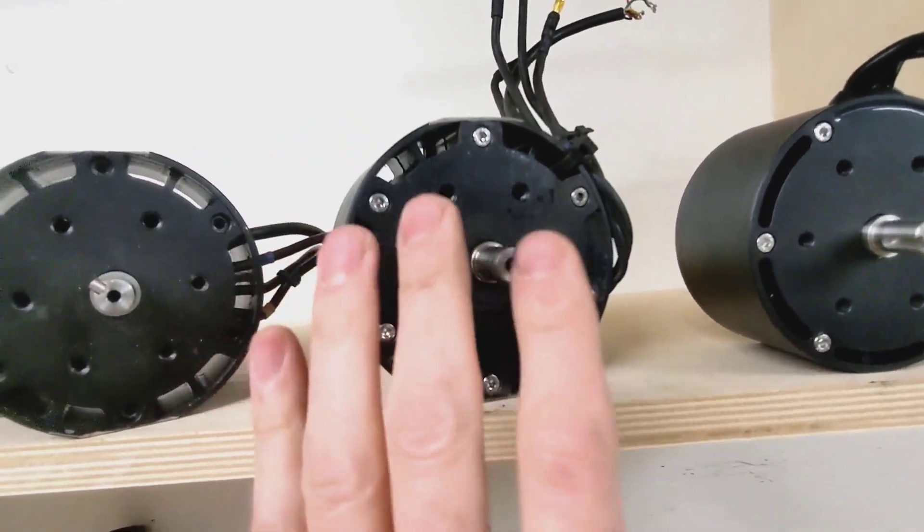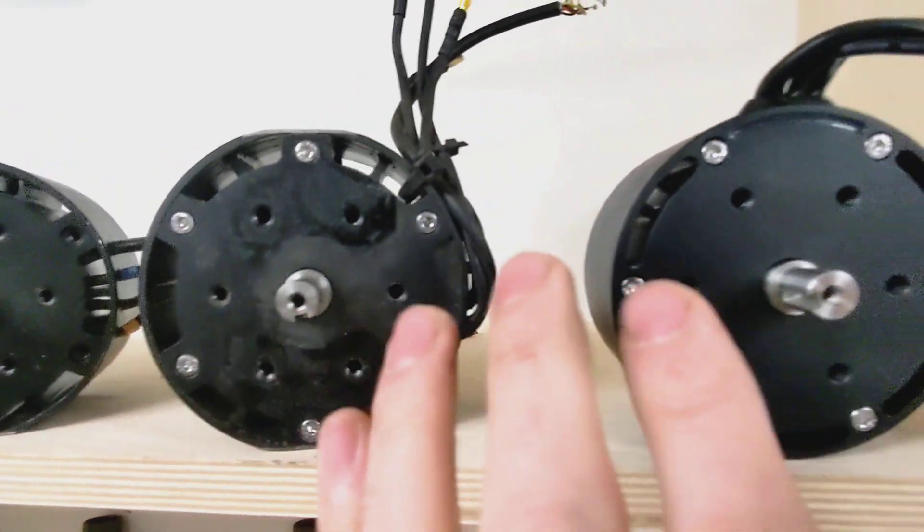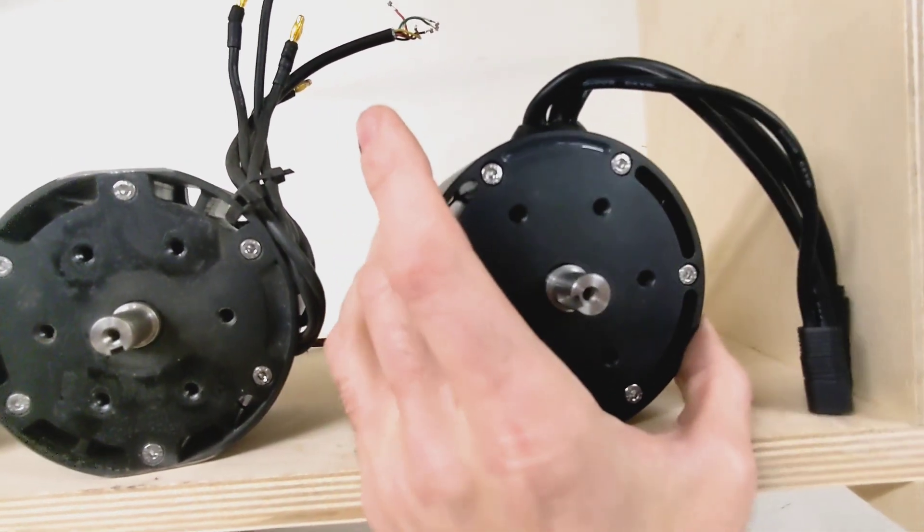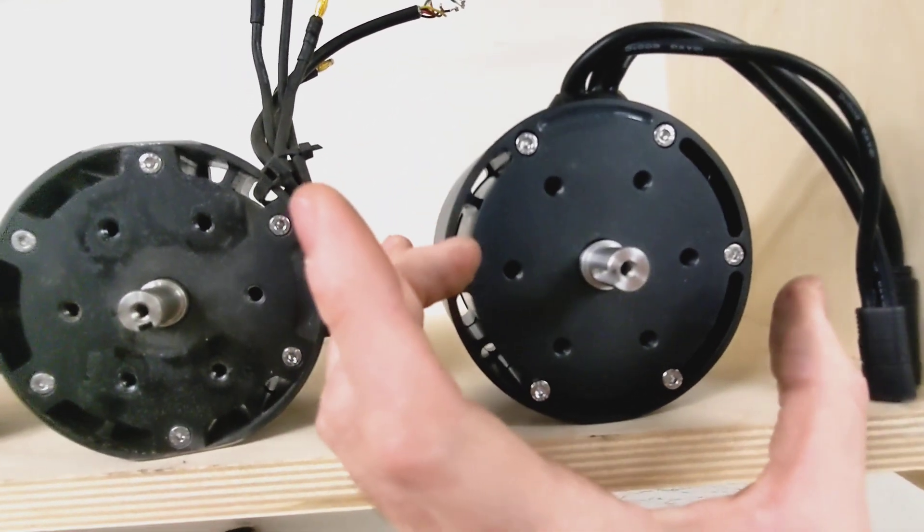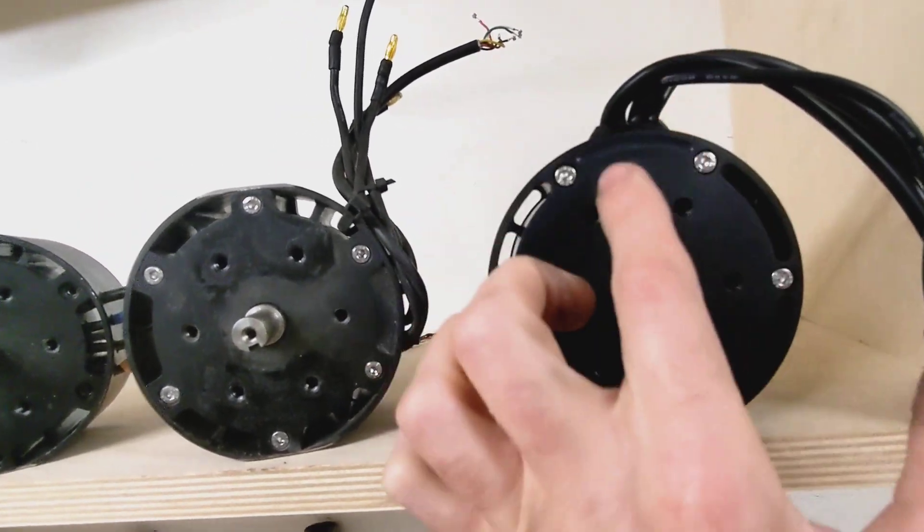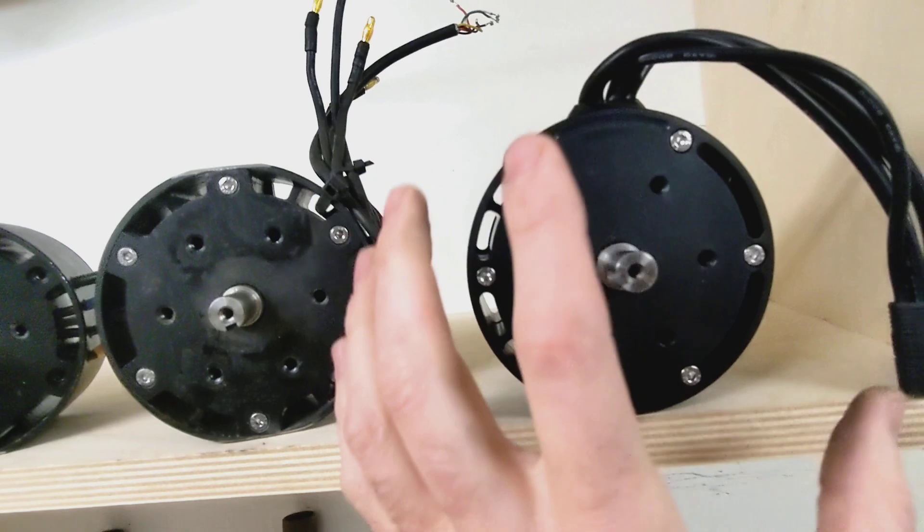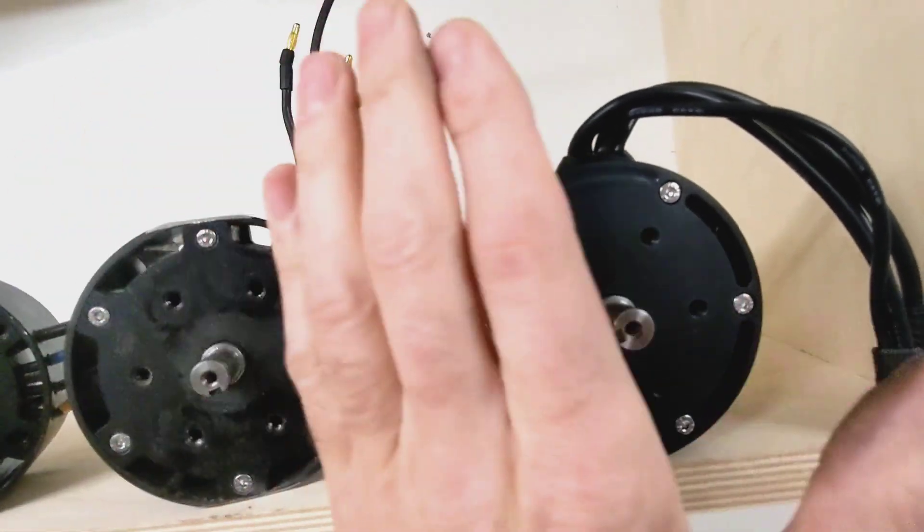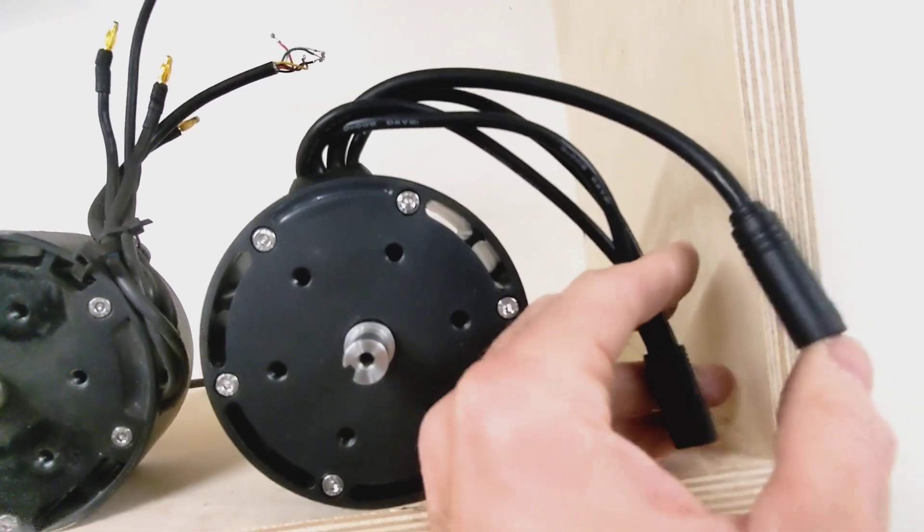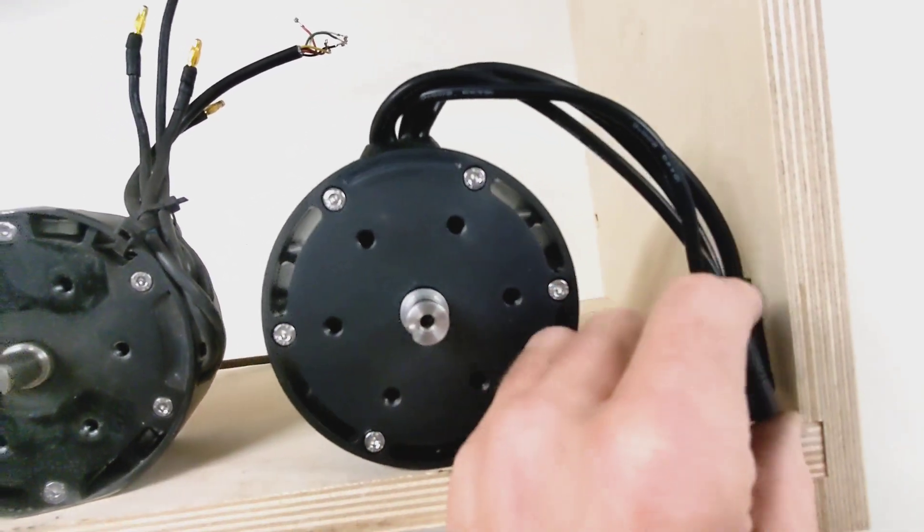So we kept everything internally the same on the final version, but we made the casing a little more compact, and the bolts better fit the design so that these cables are more out of the way. And then, of course, we switched to all waterproof Higo connector and AMAS connector.